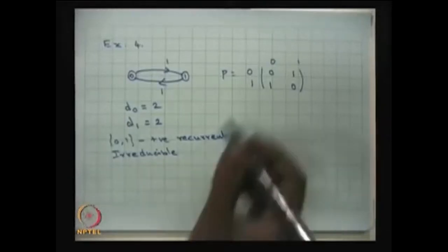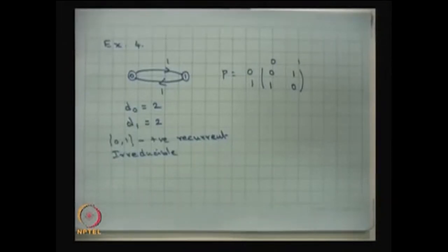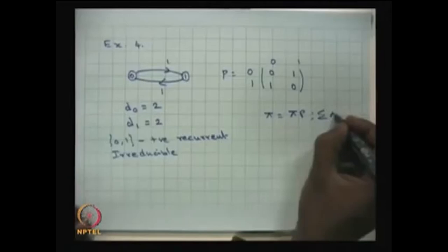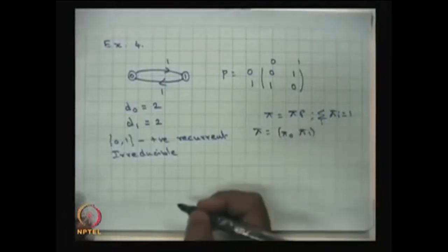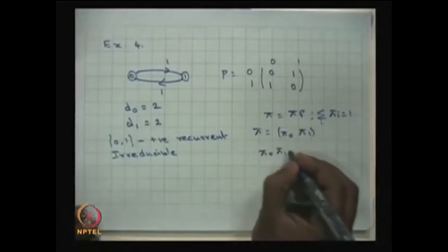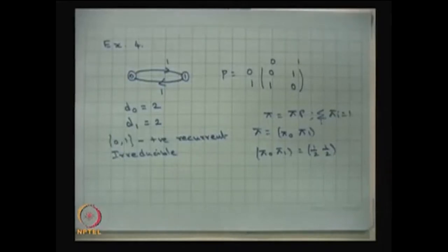Note that the column sums in this example are also one, so it is a doubly stochastic matrix. Using the previous result — finite, irreducible, doubly stochastic — the stationary distribution exists. Solving π = πP with the constraint Σπ_i = 1, where π = (π_0, π_1), gives π_0 = 1/2 and π_1 = 1/2. This is the stationary distribution, meaning in the long run the system is in state 0 or 1 each with probability 1/2.